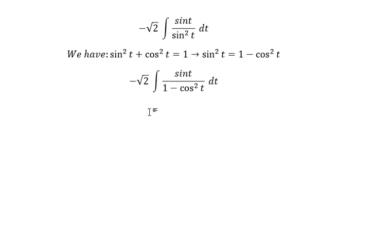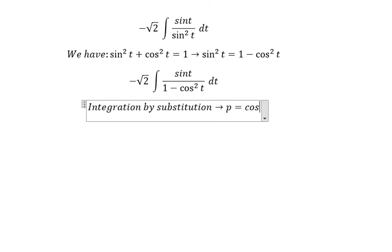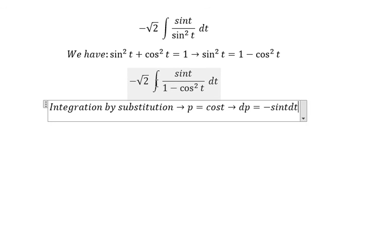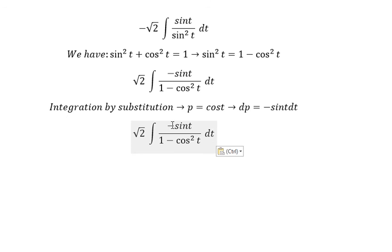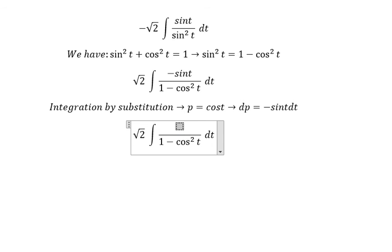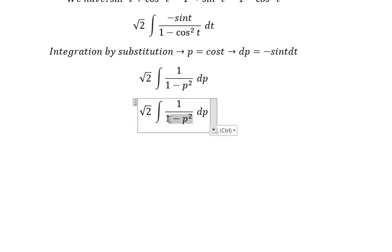Now we can use integration by substitution again. We put p equal to cos(t). Then dp equals negative sin(t) dt. Because we have a negative already in here, we put negative next to sin(t). This expression we change for dp, and this one we change for p squared.